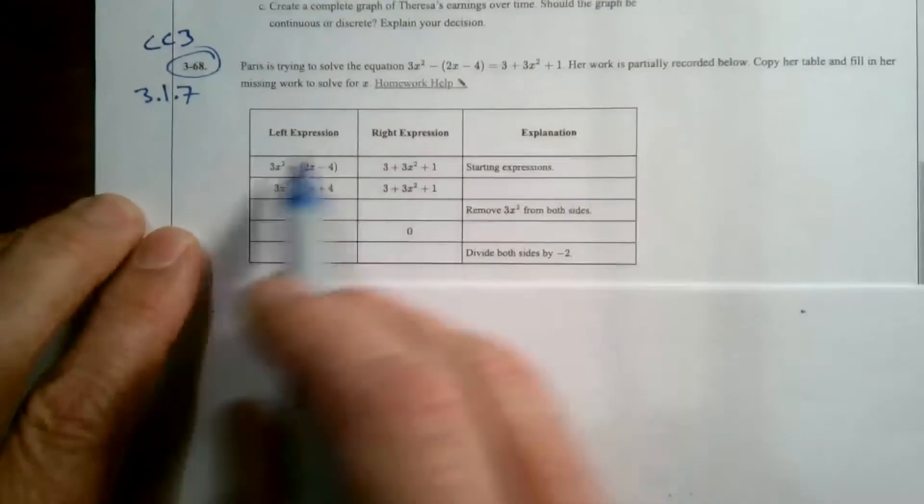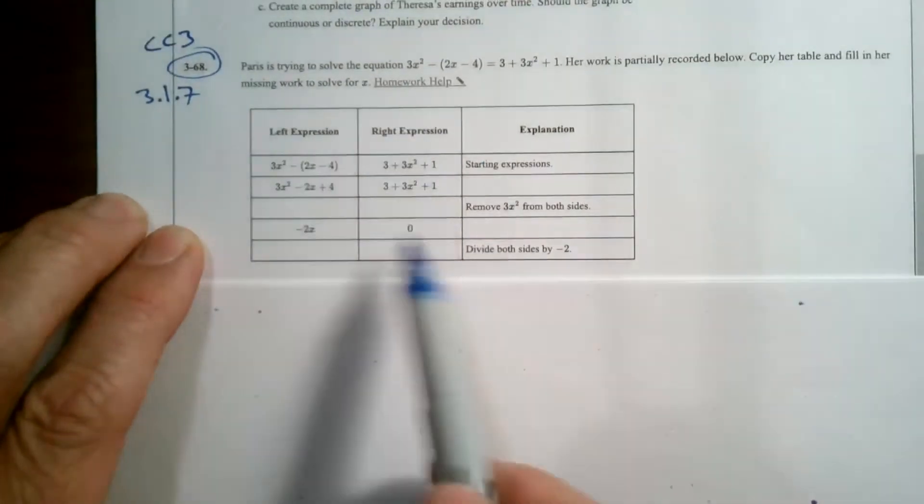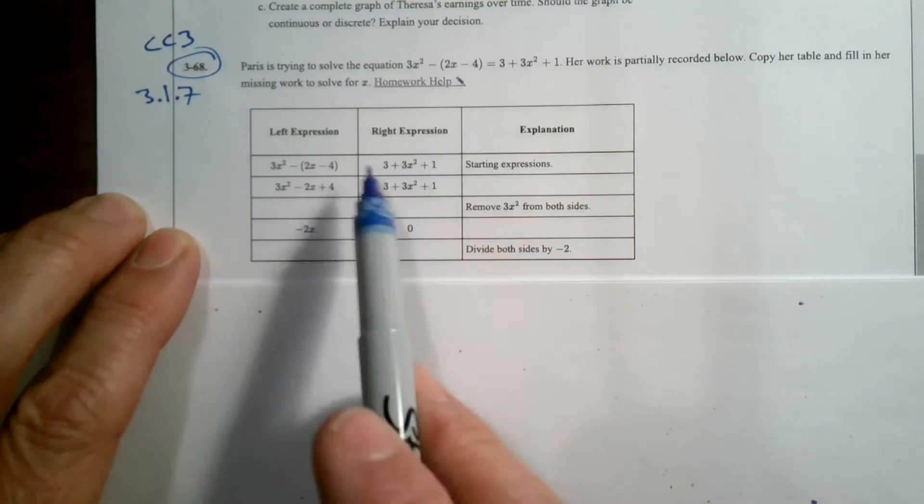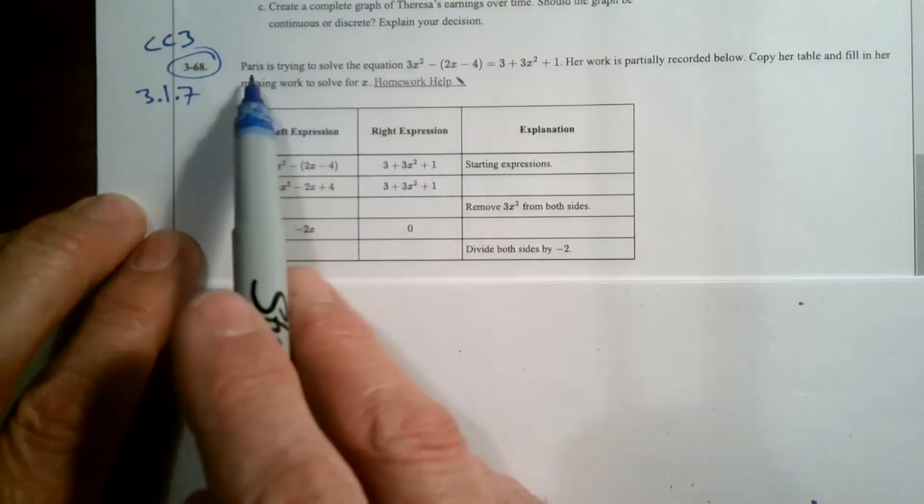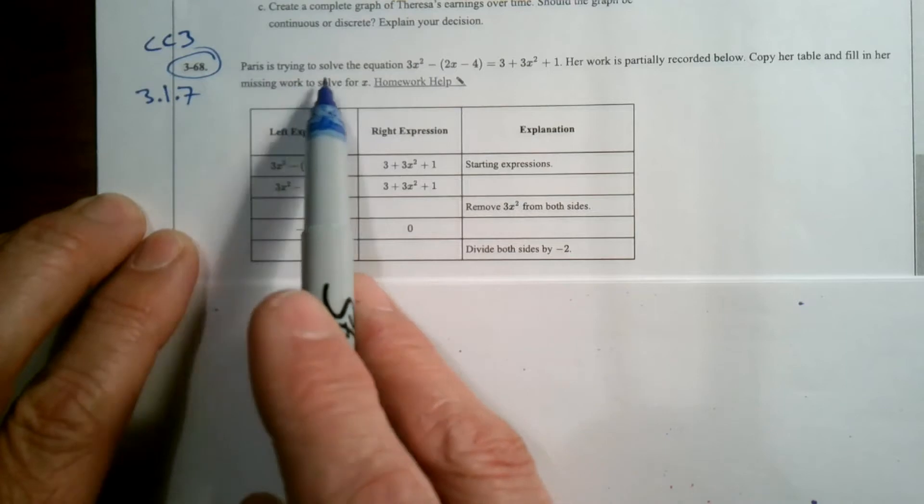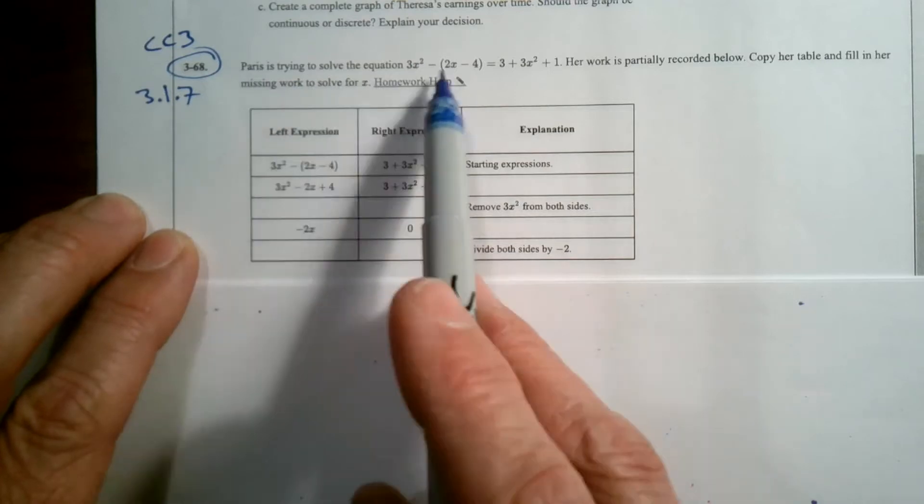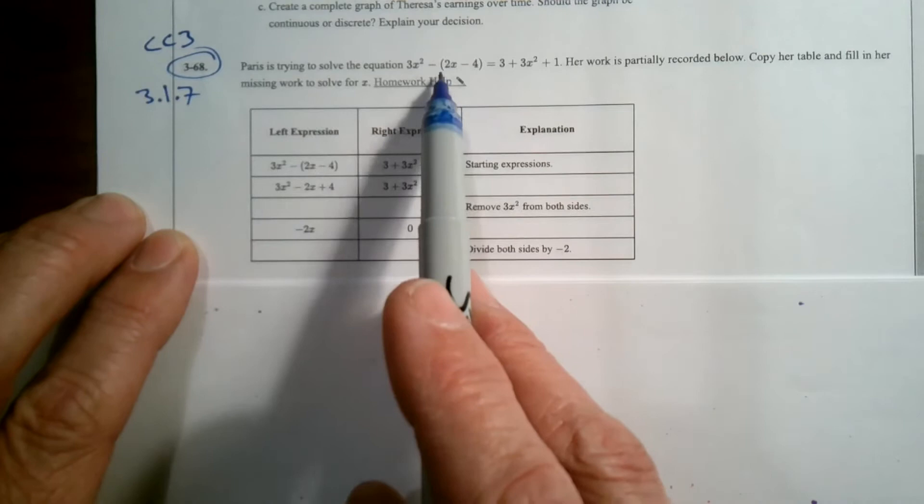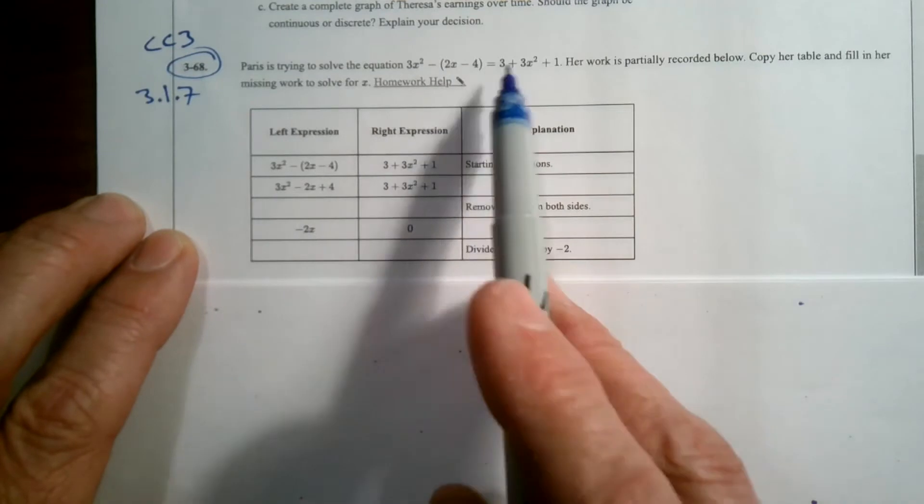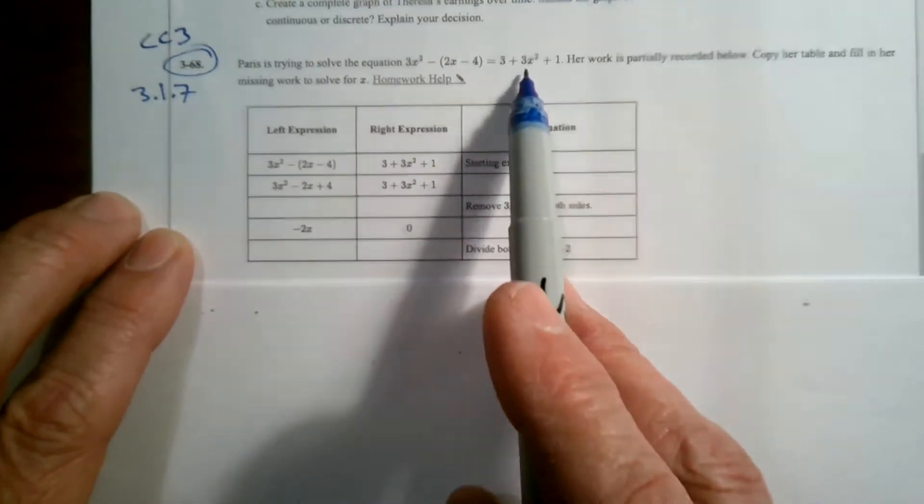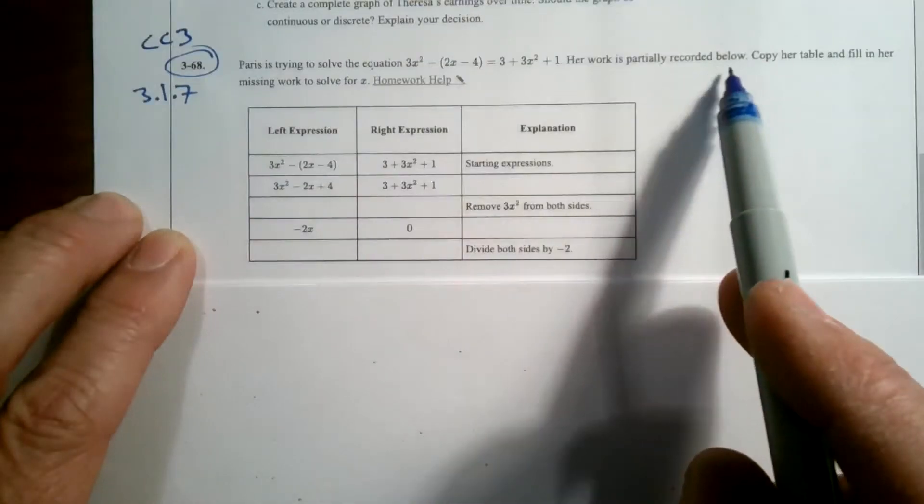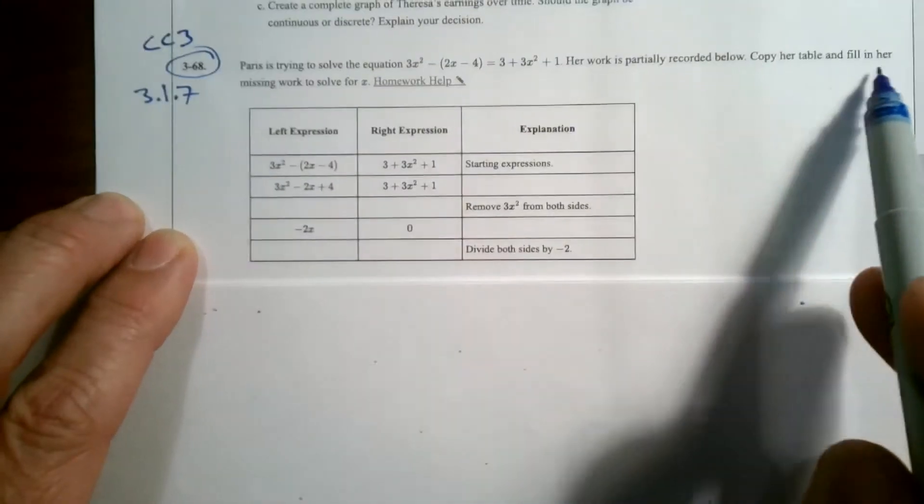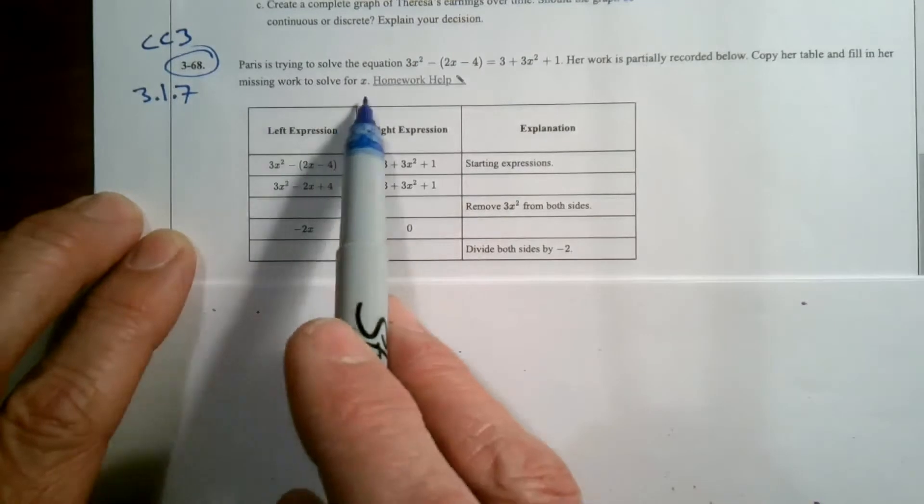So I have a table that kind of gives some of the steps in solving this equation. So it says here, let's read the problem. Paris is trying to solve the equation 3x² minus the quantity (2x - 4) equals 3 plus 3x² plus 1. Her work is partially recorded below. Copy her table and fill in the missing work to solve for x.